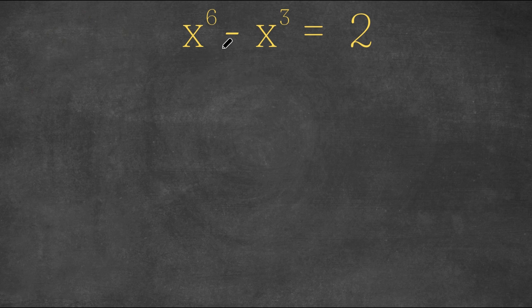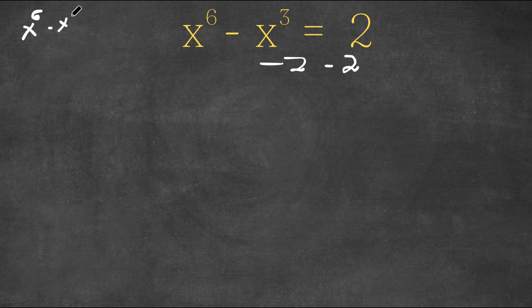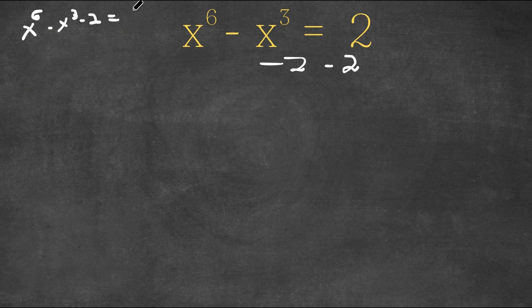So we have x to the power of 6 minus x to the power of 3, which is equal to 2. Now what I'm first going to do is subtract 2 on both sides. So now we have x to the power of 6 minus x to the power of 3 minus 2 is equal to 0.